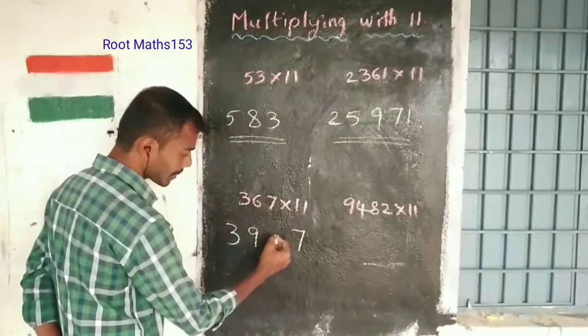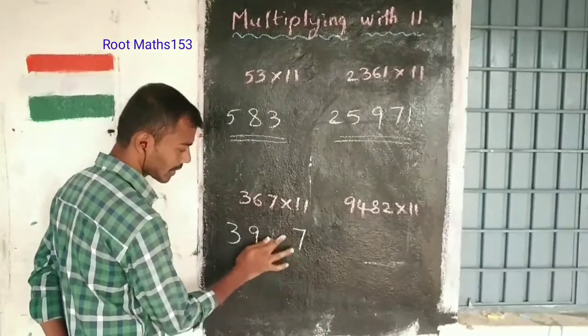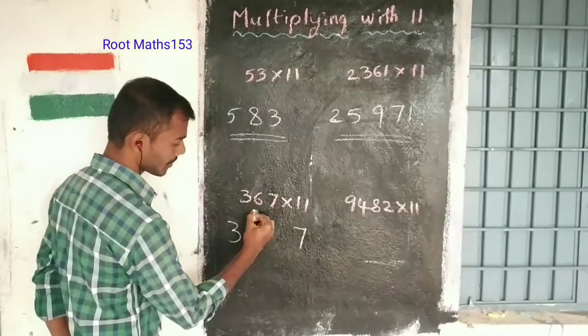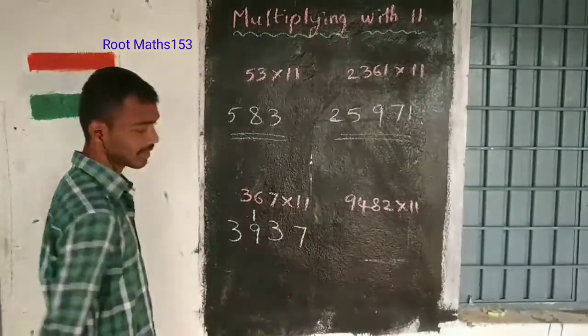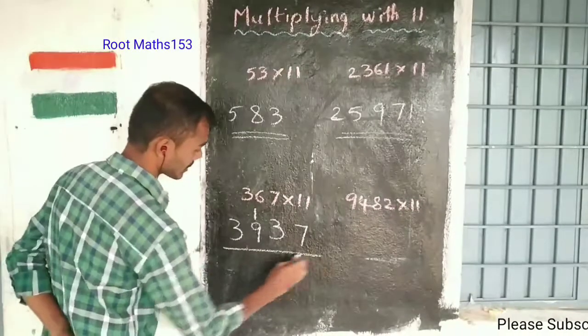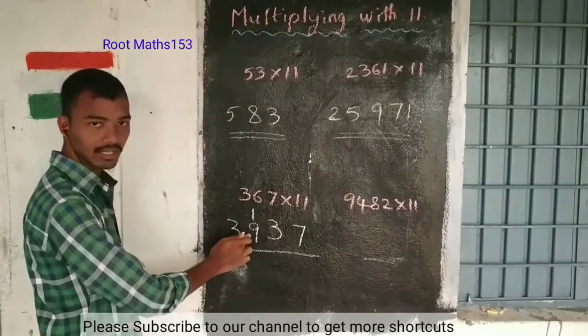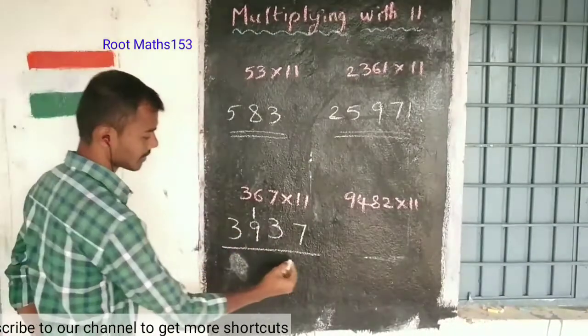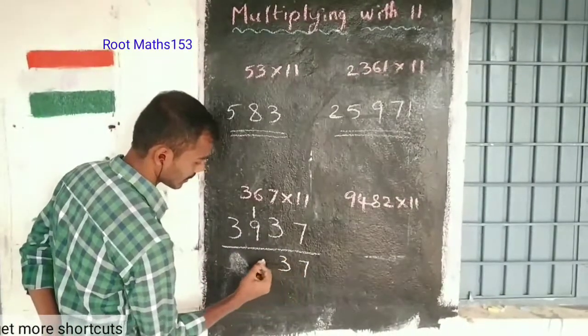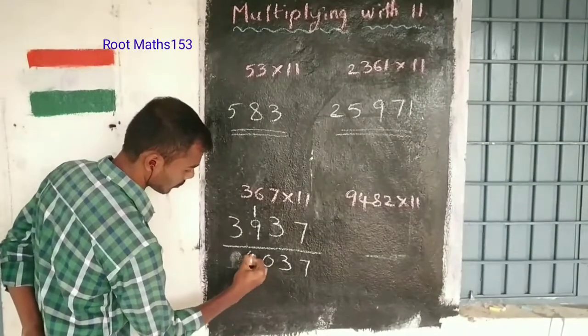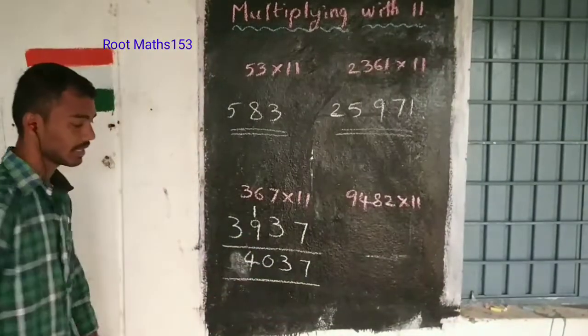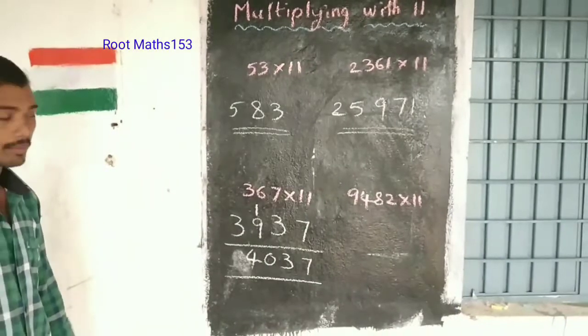When we get two digits from addition, we carry the one. So 13 gives us 3, and we carry 1. Adding that carried 1 to 9 gives 10, which means write 0 and carry 1 again. Building the final answer: 4, 0, 3, 7. So 367 times 11 equals 4037.